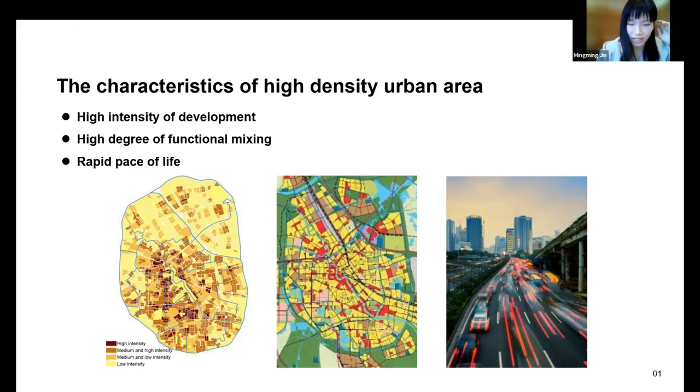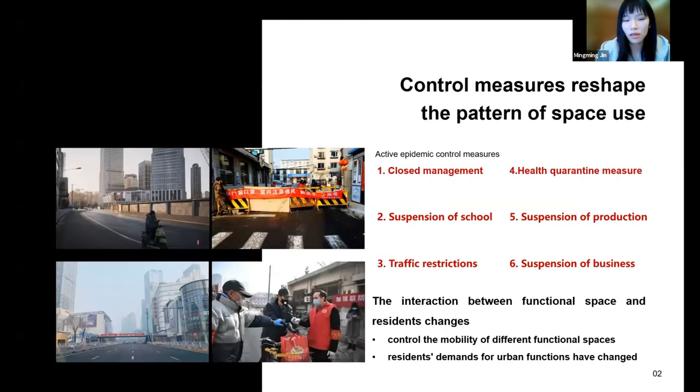Tianjin is China's megacity. Its central area is exactly like this. Controlling the spread of the epidemic in the core areas of large cities is very important. Tianjin has taken active epidemic control measures to minimize public gathering activities such as closed management, suspension of school, production, and business. It effectively controls the epidemic by also changing the original state of urban operation.